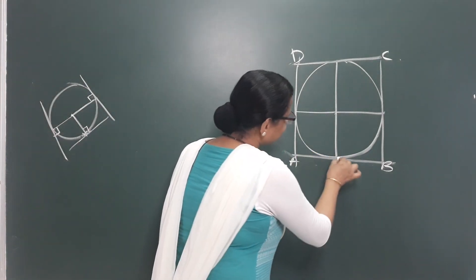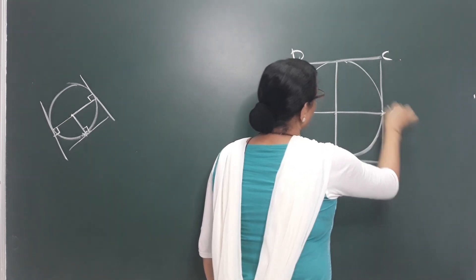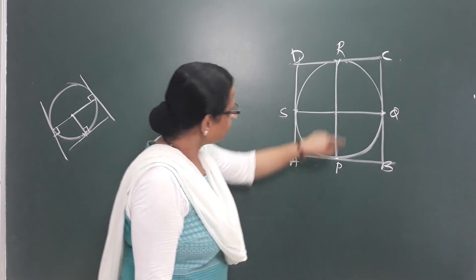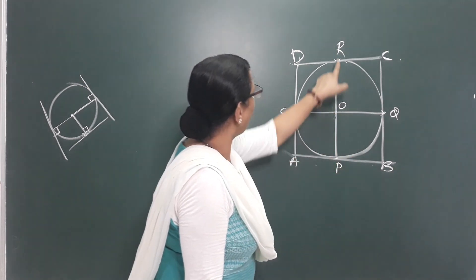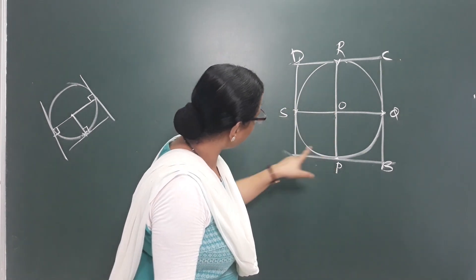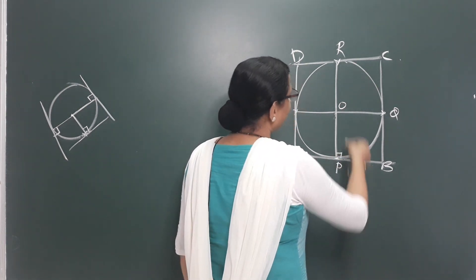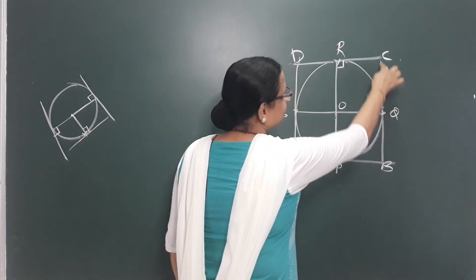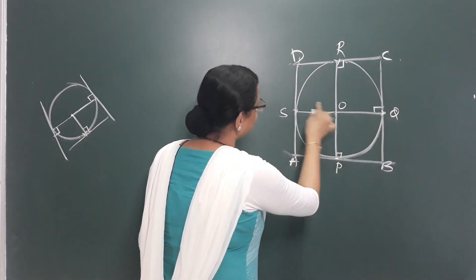The four points on the circle are P, Q, R, S. This is the center O, and the radii are OP, OQ, OR, OS. By the tangent theory, the radius is perpendicular to the tangent at the point of contact, so each angle here is 90 degrees — 90, 90, 90, 90. All are perpendicular.